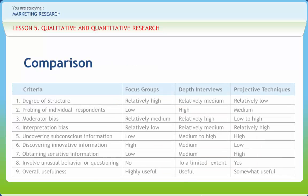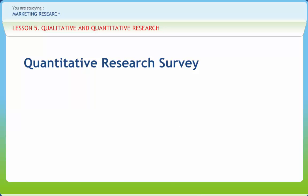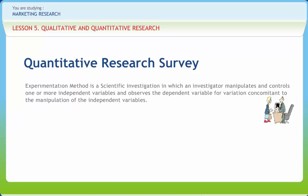A comparison slide is provided for review. The observation method involves recording occurrences or behaviors without questioning or communicating with the people involved. The experimentation method is a scientific investigation in which an investigator manipulates and controls one or more independent variables and observes the dependent variable for variation concomitant to the manipulation of the independent variables.